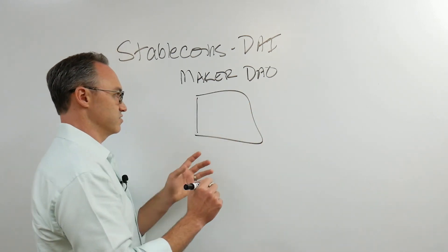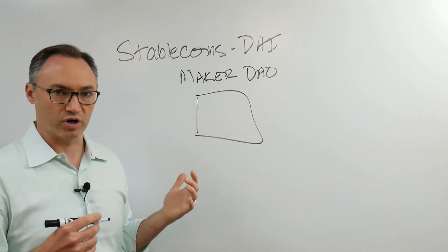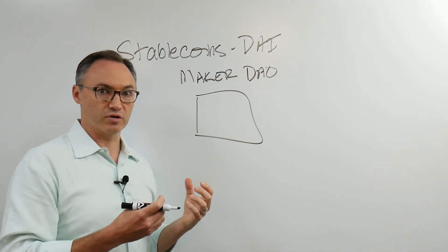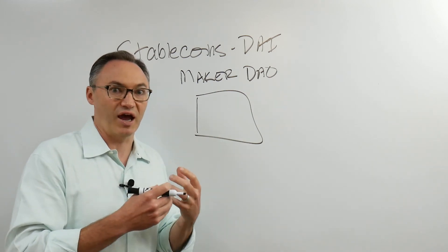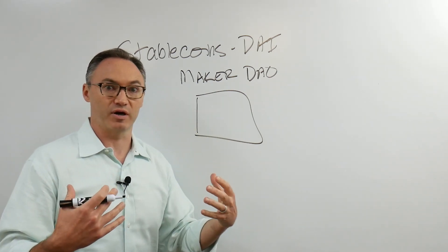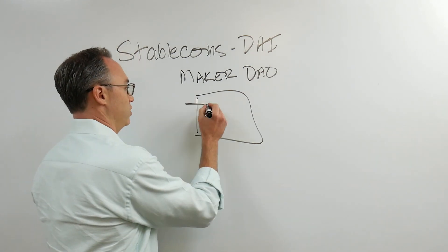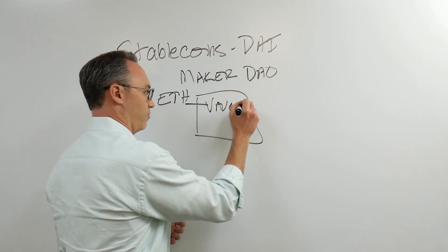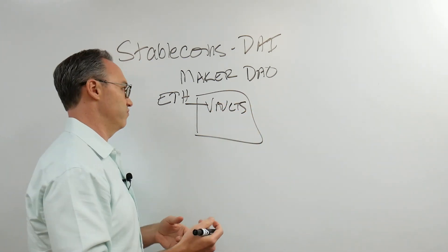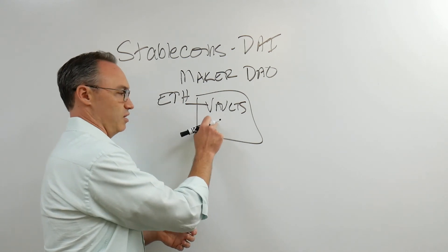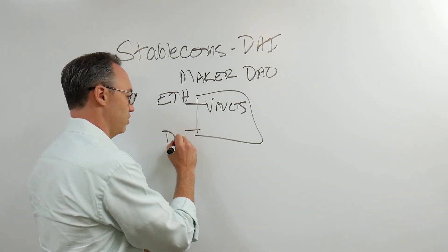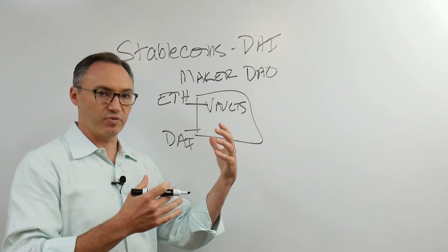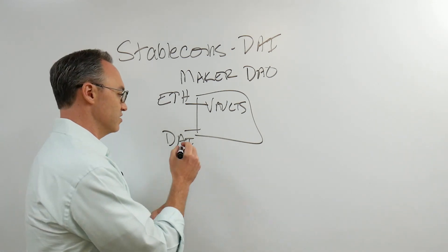So what they did is they created essentially we'll call it the black box, the algorithm, whatever we want. And they had to give people this incentive to say, look, you're already in the cryptocurrency world, right? We have to use other programmatic money for this. And other programmatic money in the first case of this was ETH. So we need people to lock up their ETH in these vaults. At the time they weren't called vaults. They were called CDPs. Now they call them vaults. You lock up your ETH. Okay? And in return for that you get DAI. Now why would you want to do that?